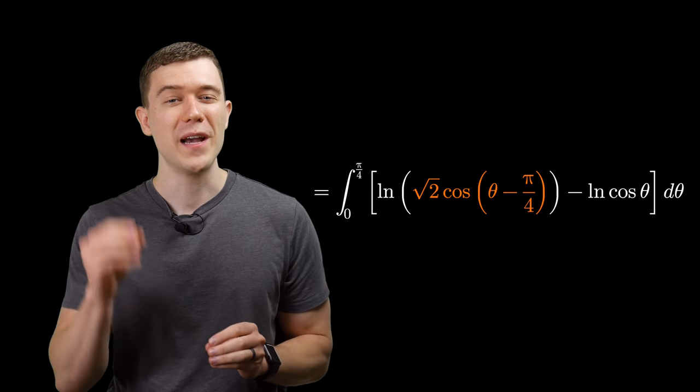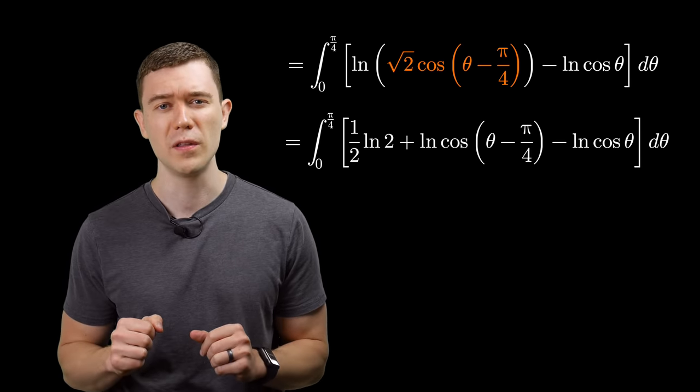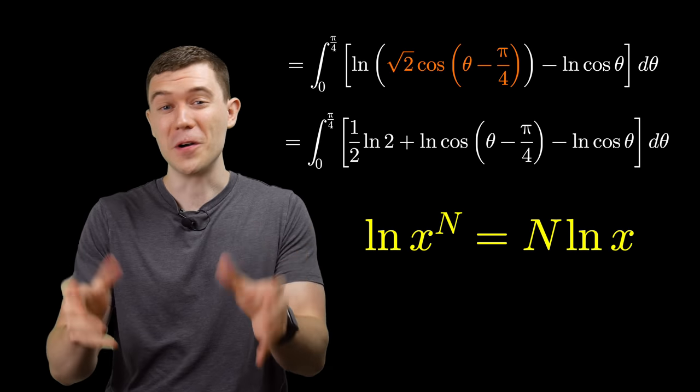So now, once again, we have the log of a product. Let's just split that up into separate logarithms, and we'll use properties of logarithms to drop that exponent down front. Time for the fun part.